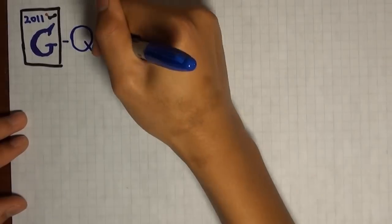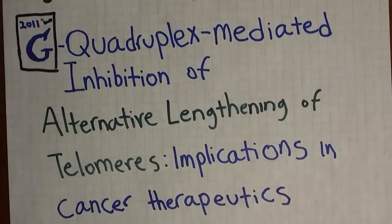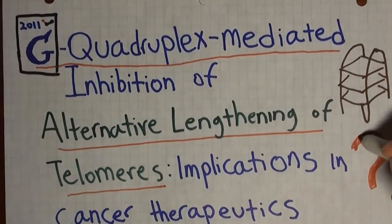Hello, my name is Eric, and my project is on using G-Quadruplex-mediated inhibition of alternative lengthening of telomeres as a means of curing cancer. Don't worry if this doesn't make sense right now. I'll explain what these are later.